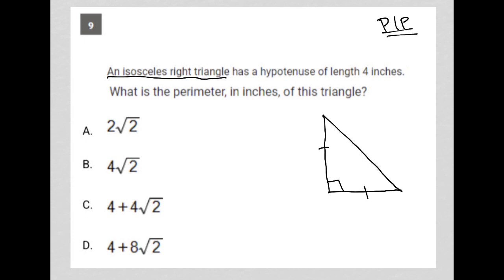An isosceles right triangle has a hypotenuse of length 4 inches. Okay, so now I label my hypotenuse as 4. What is the perimeter in inches of this triangle? Okay, so I need to figure out what are these values here.